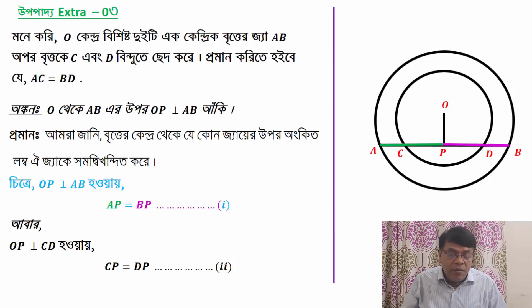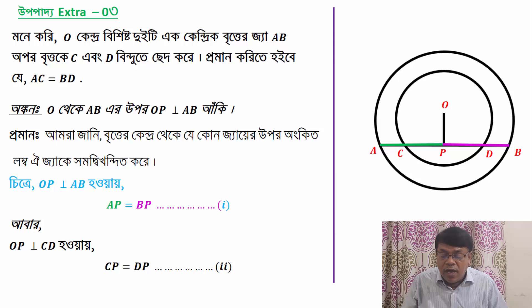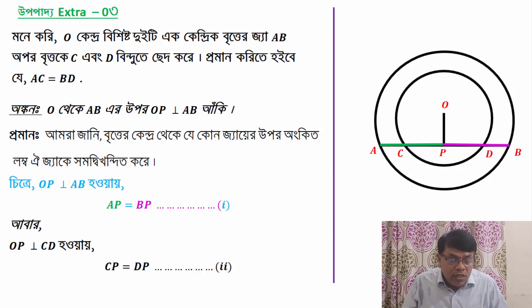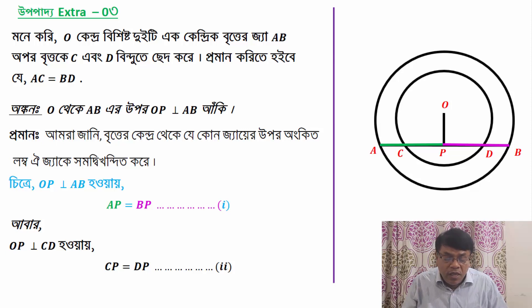As we know, a lot of different people can be used to do this at the same time. A P is a result of B P.